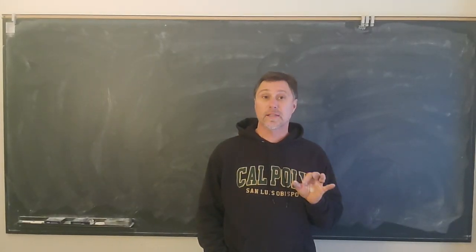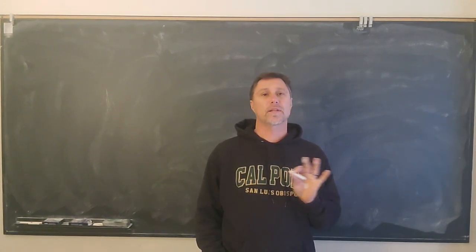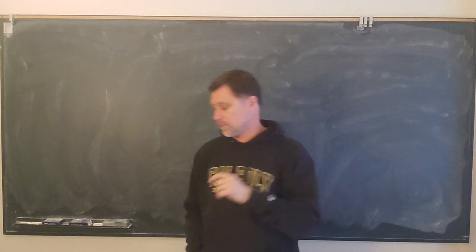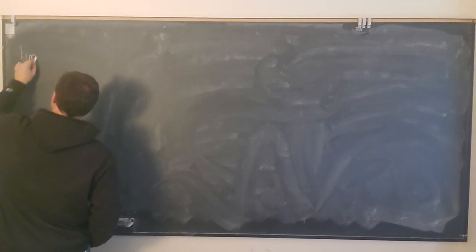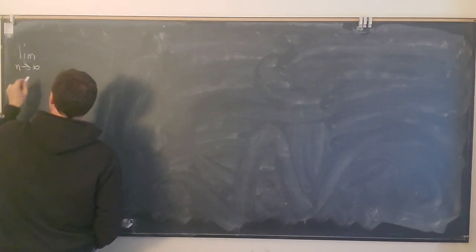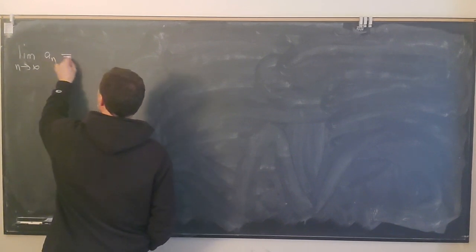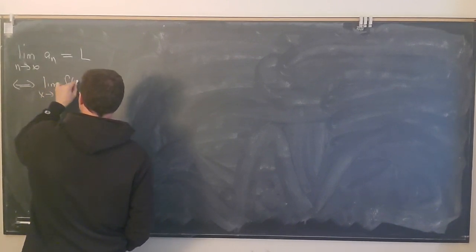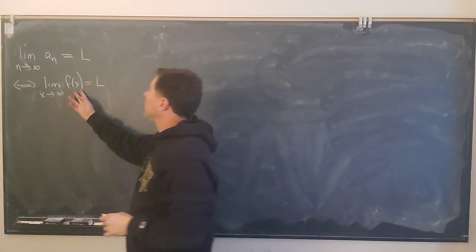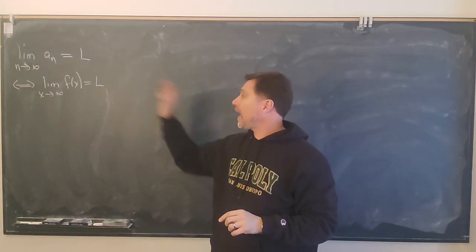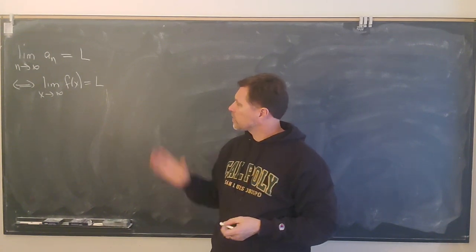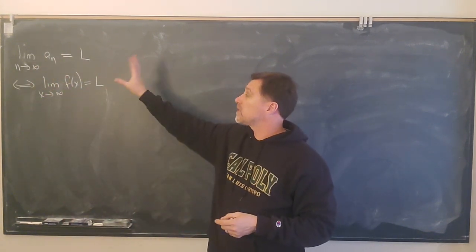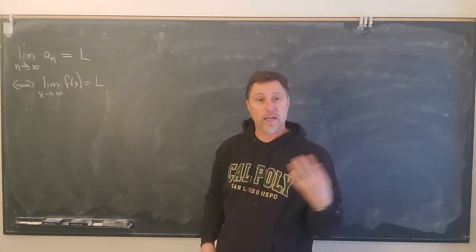Let's pick up where we left off. We were discussing limits of sequences, and we learned about this associated function that allows us to use rules for computing limits of functions to compute limits of sequences. We're concerned with computing the limit as n goes to infinity of a sub n, and we know that equals l if and only if the limit as x goes to infinity of f of x equals l, where f of x is the associated function — that's the one you get by replacing n with x in the sequence. This technique is going to work most of the time, and it's one of our standard procedures for computing limits of sequences.